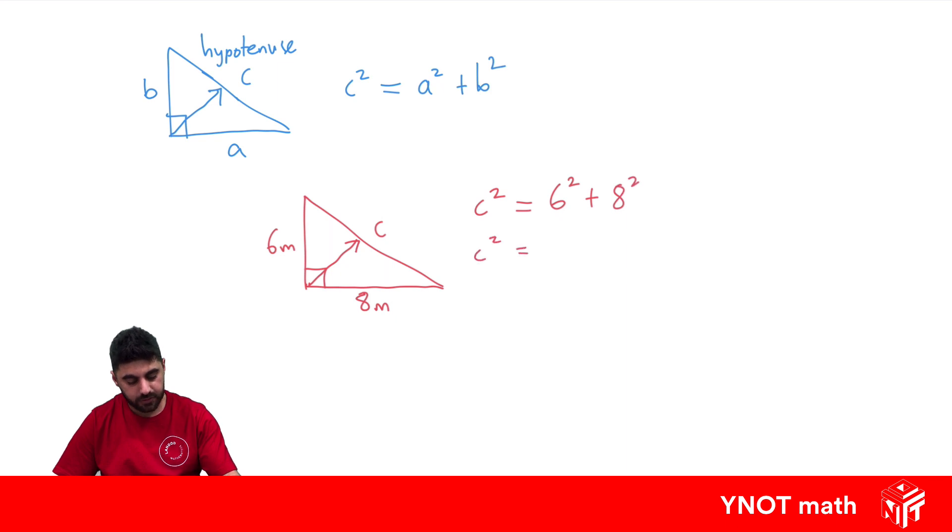So c squared: well, 6 squared means 6 times 6, which is 36. 8 squared means 8 times 8, which is 64. 36 plus 64 gives us 100. Well, that tells us what c squared is, but not c.